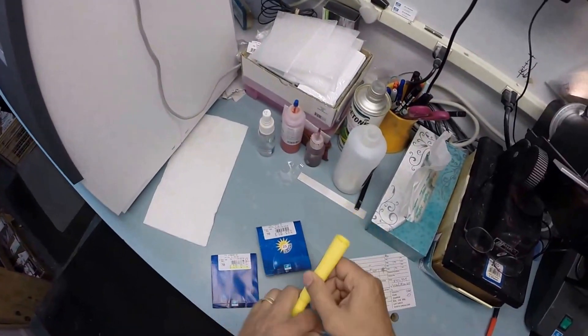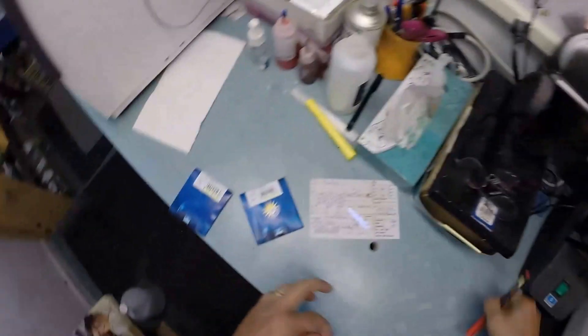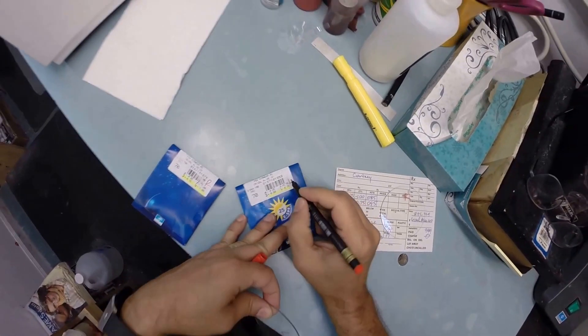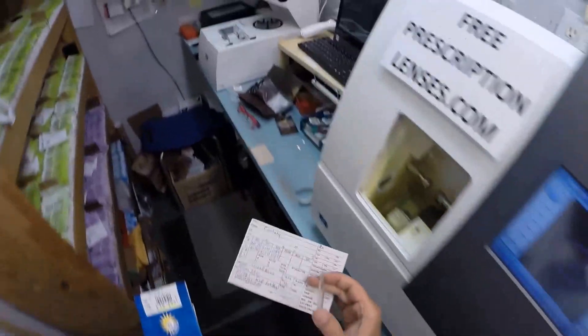I didn't label the left lens. Plus 50 minus 75. Now these packets come in both plus cylinder and minus cylinder. Many years ago they used to put plus cylinder on the front of the lens. Now everything is on the rear surface so it is minus.